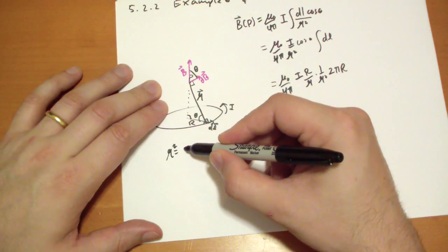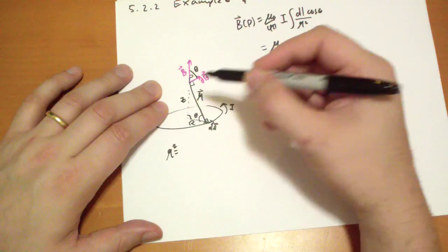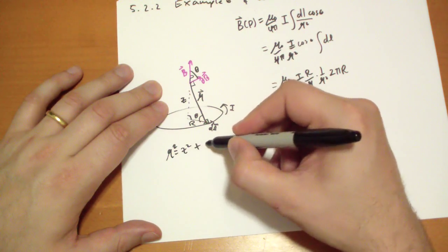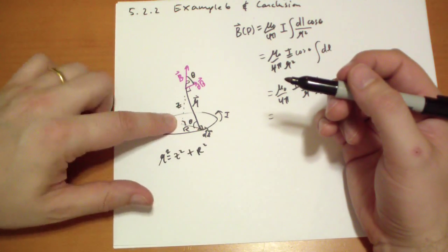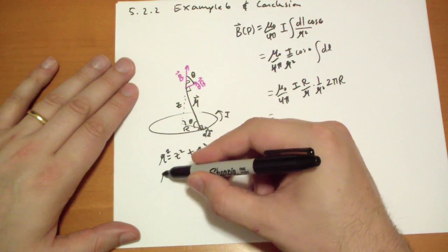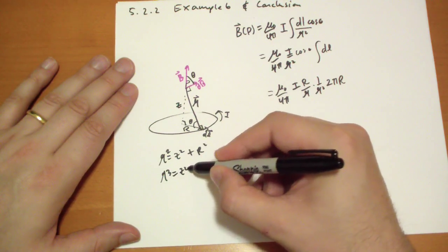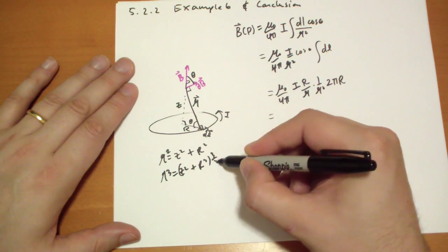R squared actually is equal to, the distance here is Z. Did I write that down earlier? No, I didn't. Z squared plus R squared, it's a right triangle. Z and R are perpendicular. And so R cubed has to be Z squared plus R squared.